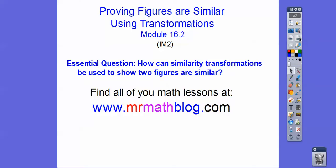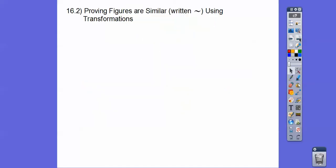So here's our question: how can similarity transformations be used to show two figures are similar? This is my third attempt at recording — I made too many mistakes on the other two. Proving figures are similar, written with that little squiggly symbol, using transformations.